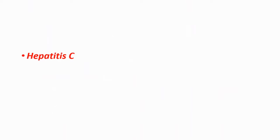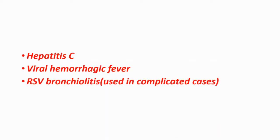Ribavirin is mainly used for hepatitis C, but it can also be used in viral hemorrhagic fever and complicated cases of RSV bronchiolitis, which is mainly seen in infants.